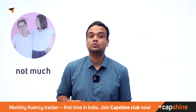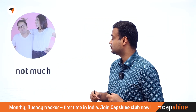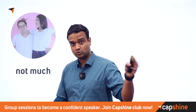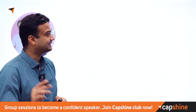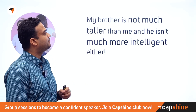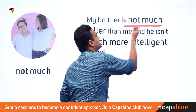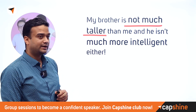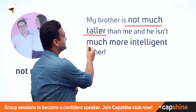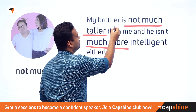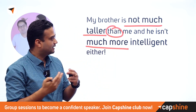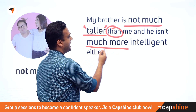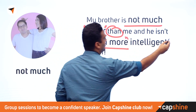Continuing our discussion on comparative adjectives: 'not much' can also be used to signify comparisons. For example, 'My brother is not much taller than me, and he isn't much more intelligent either.' Notice how 'much more' is used to signify comparisons, and it talks about qualities like 'taller' and 'more intelligent' — showing comparisons of quality between people.